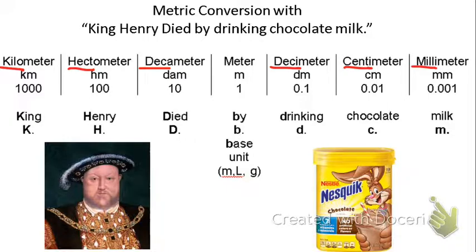The mnemonic King Henry died by drinking chocolate milk will help you remember it. We have K for kilo, H for hecto, D for deca, B is for your base unit which is either your meter, your liter, or your gram. Then we have D for drinking, C for chocolate, M for milk.